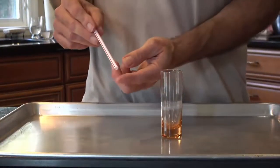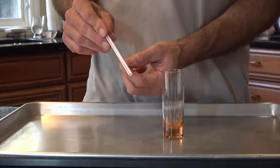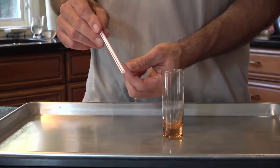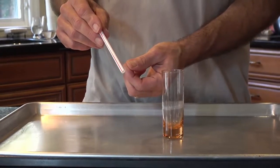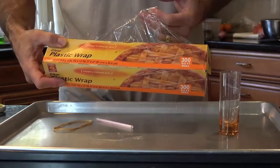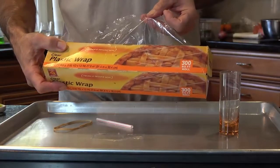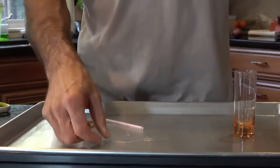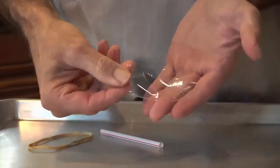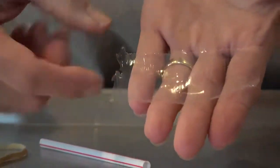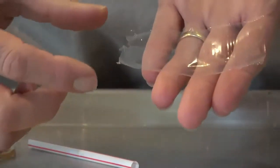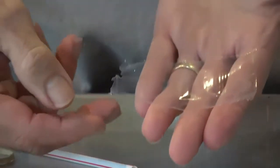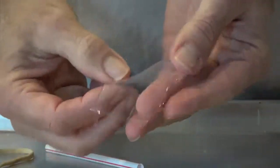And now I need to seal the bottom up and I'm going to use a little bit of plastic wrap and a rubber band for that. So I'm going to use plastic wrap to seal up the bottom of my straw. I cut a piece that's about two inches by four inches or five centimeters by ten centimeters. And I'm going to fold it in half.